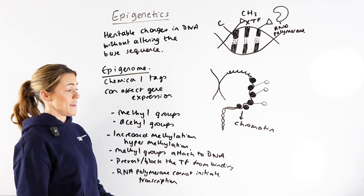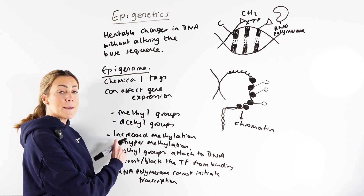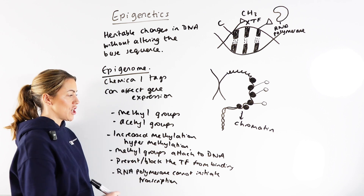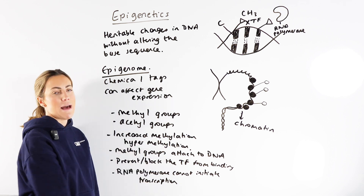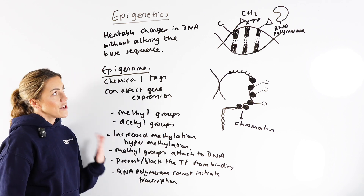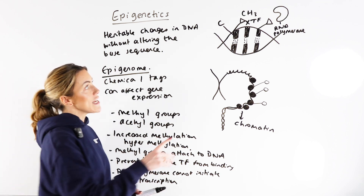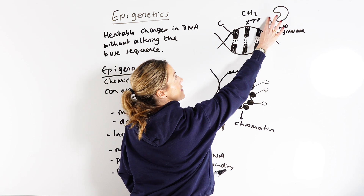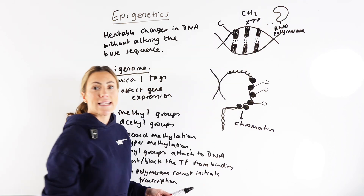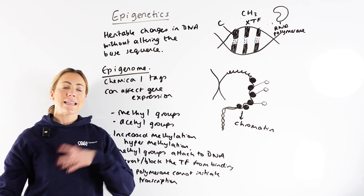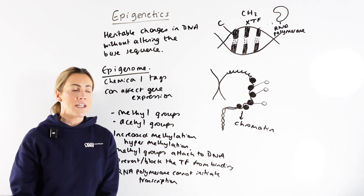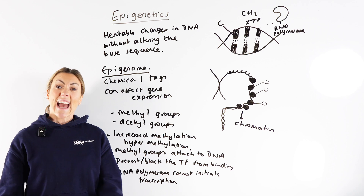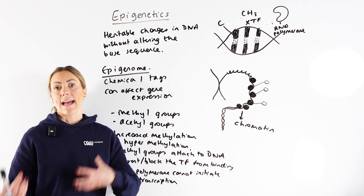You could get the opposite — what we call hypomethylation — where you decrease methylation of the DNA, and you'd see the opposite effect. If you've got fewer methyl groups attached to the cytosine bases, then the transcription factor can bind, RNA polymerase can initiate transcription, and you can actually get an increase in gene expression.